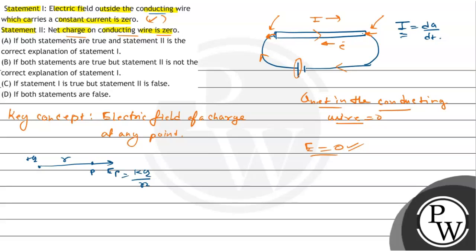So both statements are true, and statement two is the correct explanation of statement one. Because the net charge in the conducting wire is zero, that is why the electric field outside the conducting wire is zero. Our option A is correct, that both statements are true and statement 2 is the correct explanation of statement 1. Hope you understand it, best of luck.